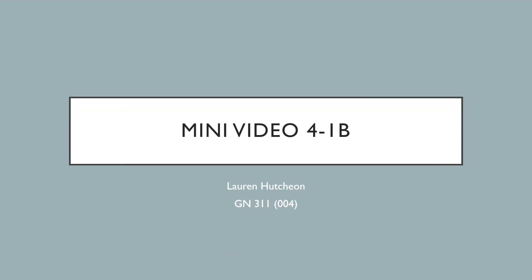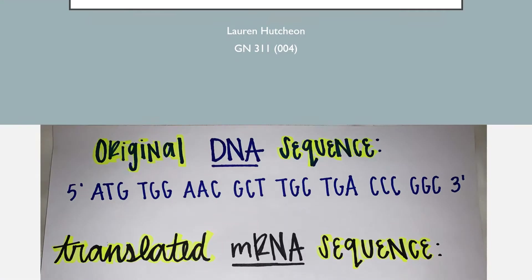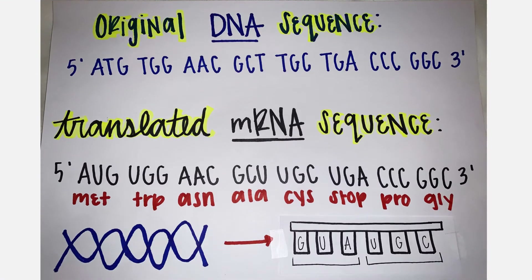I will be discussing topic 4.1b. In order to observe mutations in a DNA sequence, we must first translate it to mRNA. Here I have done that by converting every thymine nucleotide to uracil for improved efficiency. I then use the coding dictionary to determine the corresponding amino acids for each codon.